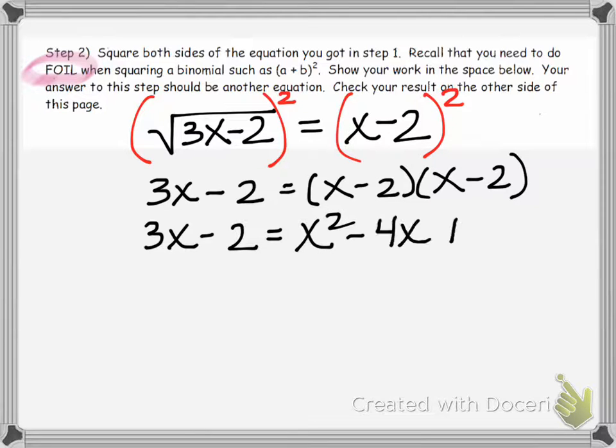After we FOIL on the right side, we're left with x squared minus 4x plus 4. This is the equation we will work with when we move to step 3.